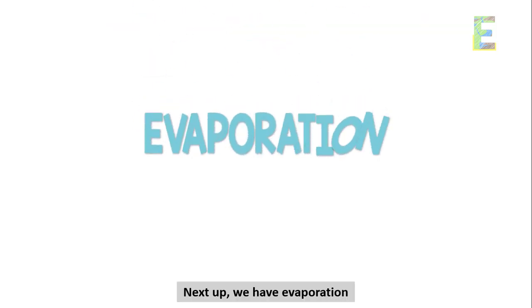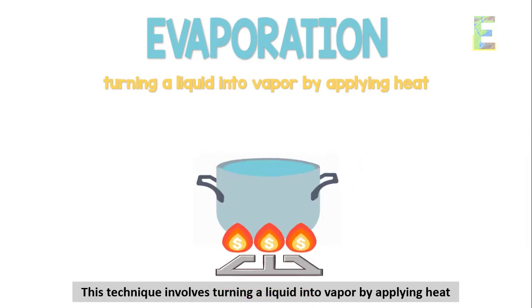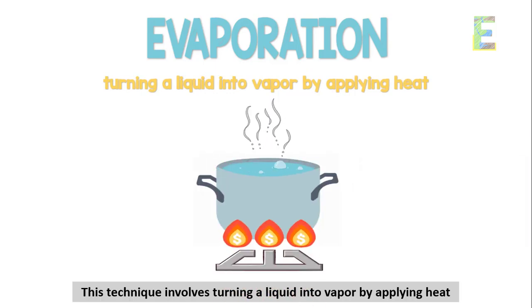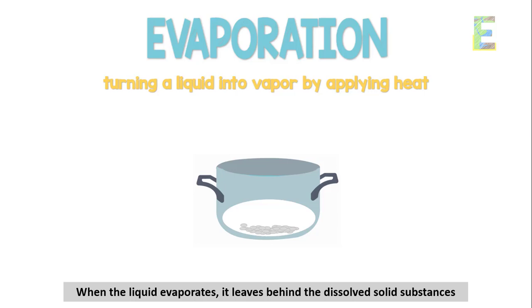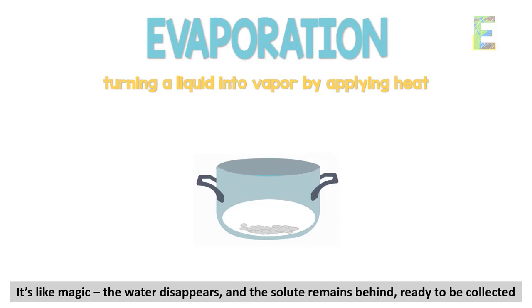Next up, we have evaporation. This technique involves turning a liquid into vapor by applying heat. When the liquid evaporates, it leaves behind the dissolved solid substances. It's like magic, the water disappears, and the solute remains behind, ready to be collected.